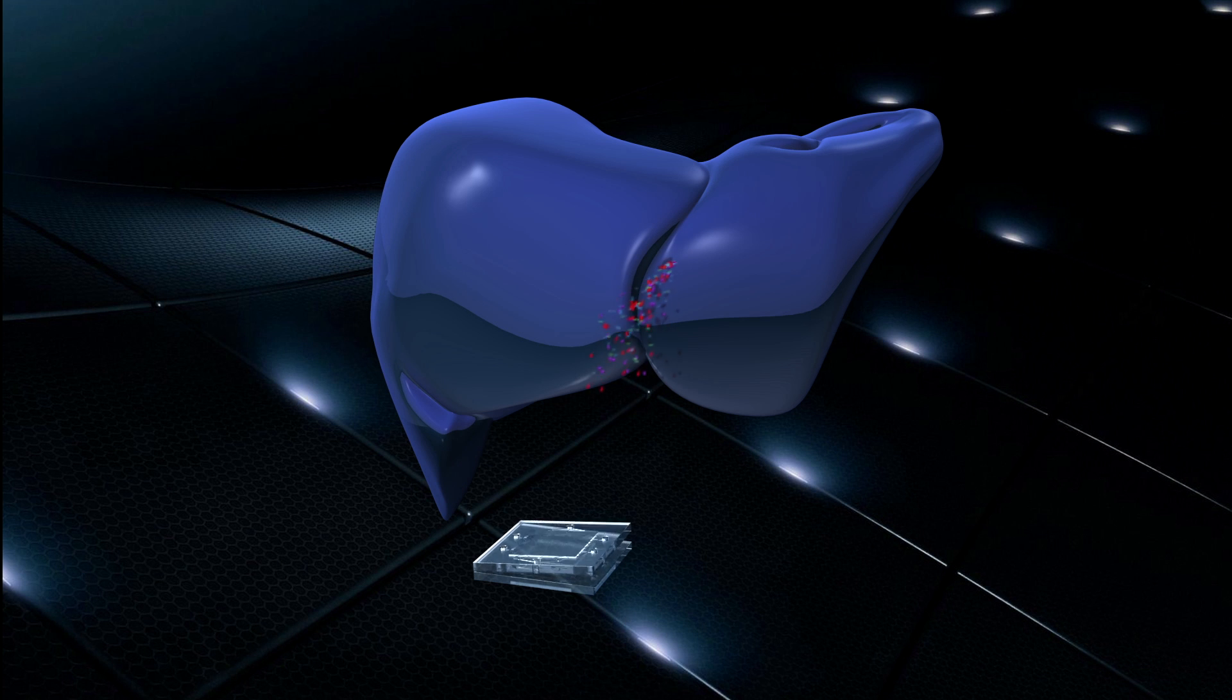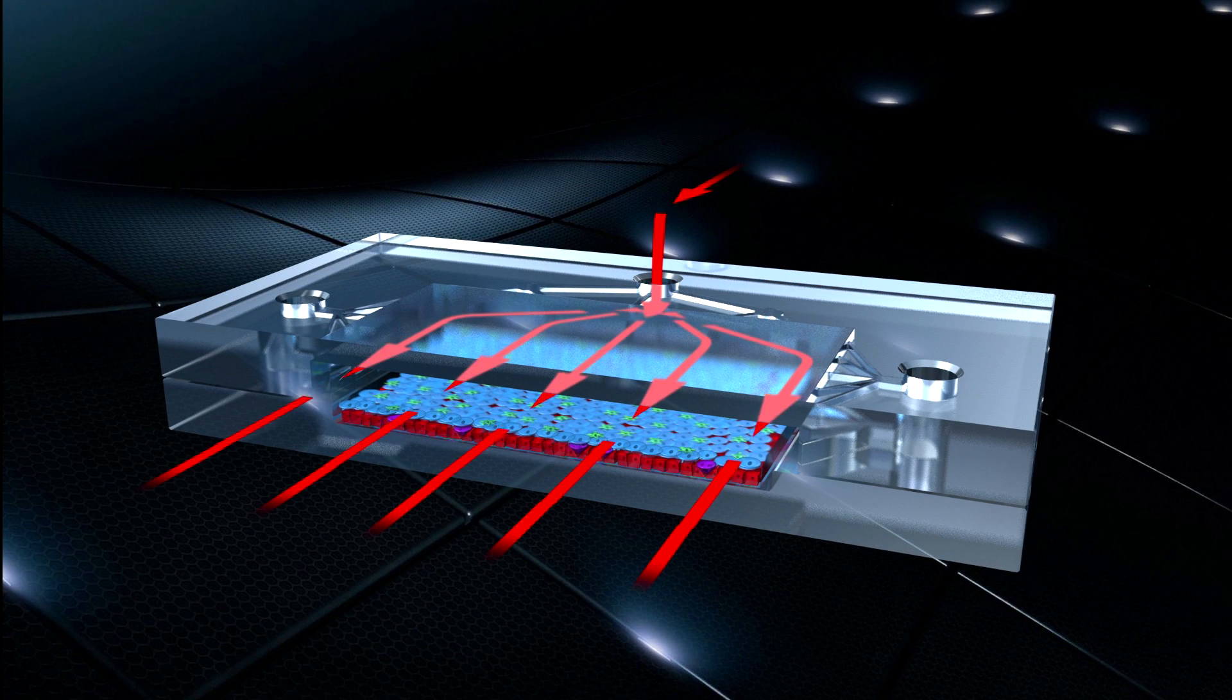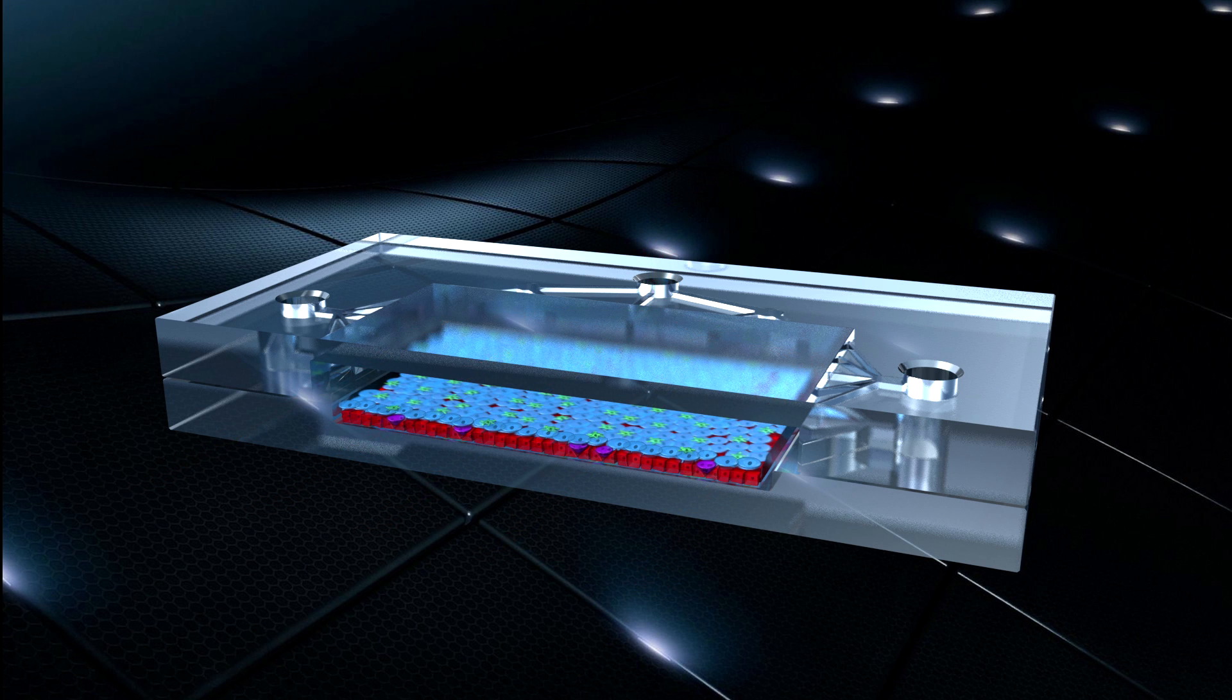One example is a liver chip, which includes multiple cell types that are organized much in the same way as they are in the human liver. Features such as blood flow can be mimicked to recreate what cells experience in the body.